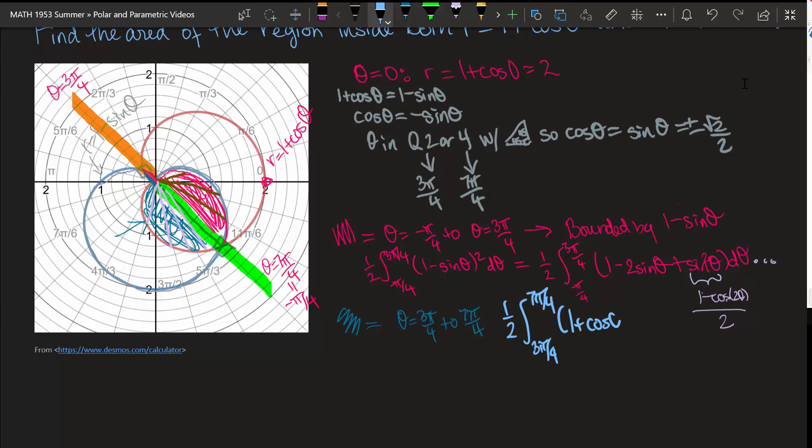And when I expand 1 plus cosine of theta again, I'll get 1 plus 2 cosine of theta plus cosine squared of theta. And I'll use a substitution here. I'll replace this with 1 plus cosine of 2 theta all over 2 to assist me in doing my integration.